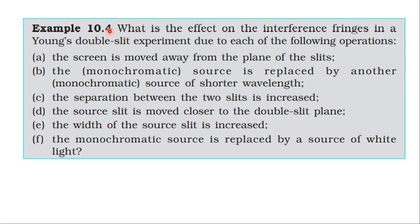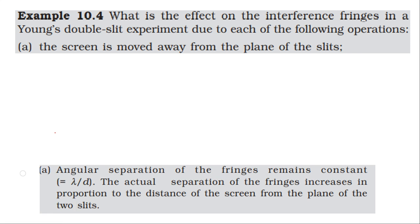From the view of this topic, let's take an example. The fourth question: what is the effect on the interference fringes in a double slit experiment due to each of the following operations? First, the screen is moved away from the plane of the slits. The fringe width formula gives the distance between the slits and the screen.